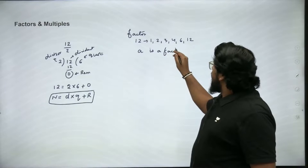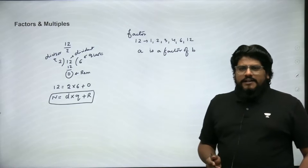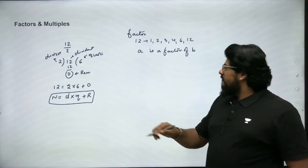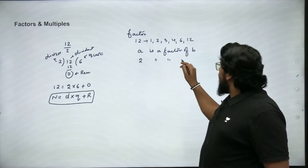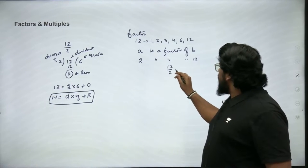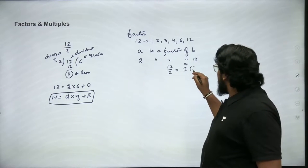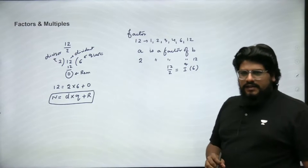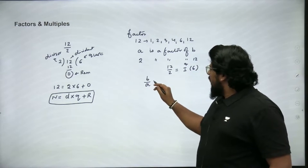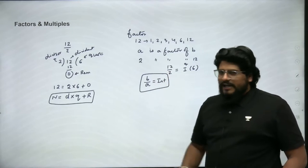If I say a is a factor of b, your mind should immediately think: 2 is a factor of 12, meaning 12 ÷ 2 gives a quotient which is an integer — in this case 6. So if a is a factor of b, that means b ÷ a should give you an integer result, because a perfectly divides b.